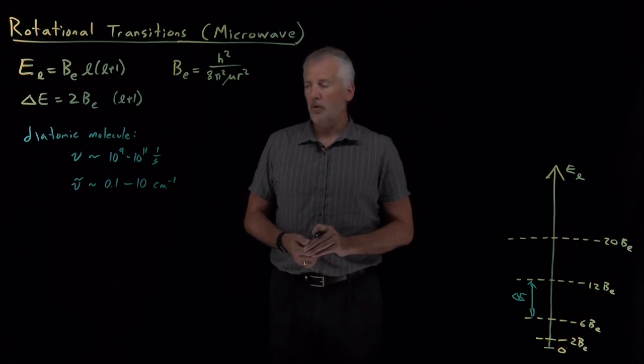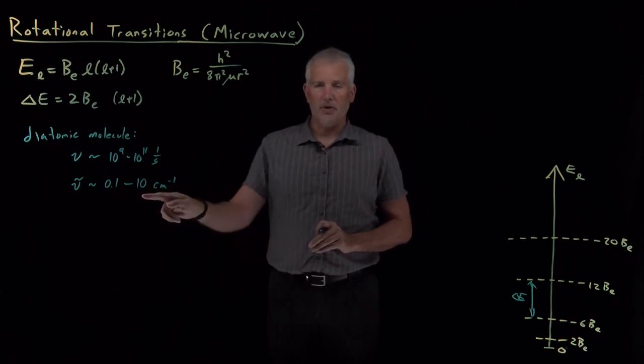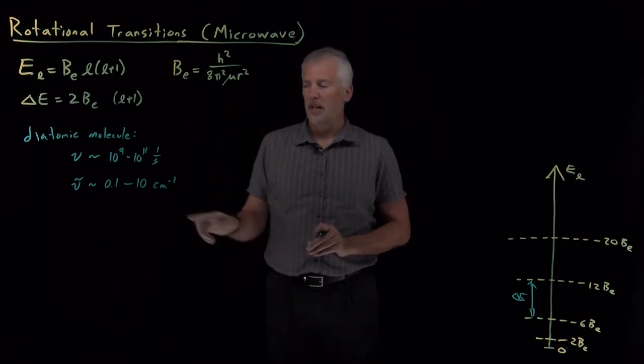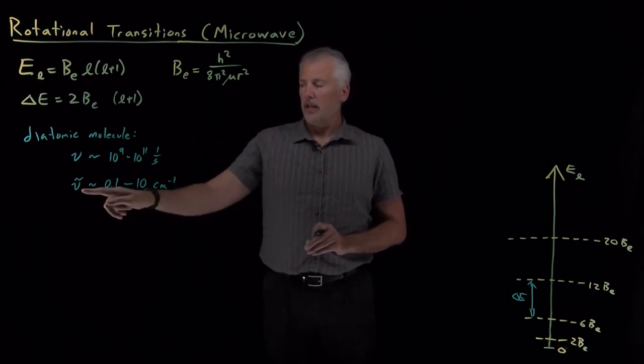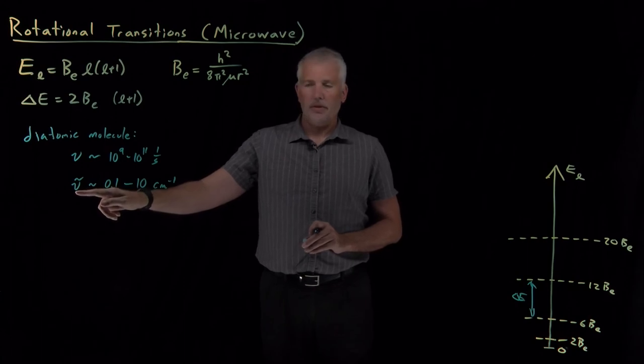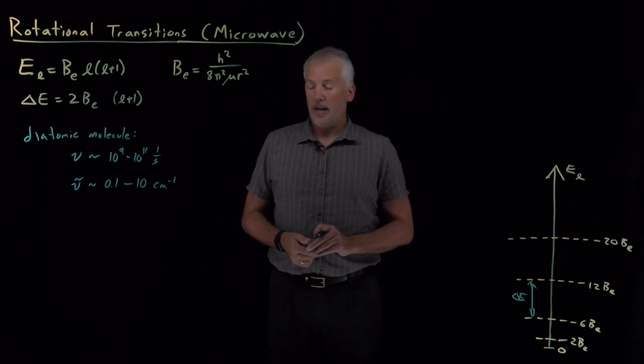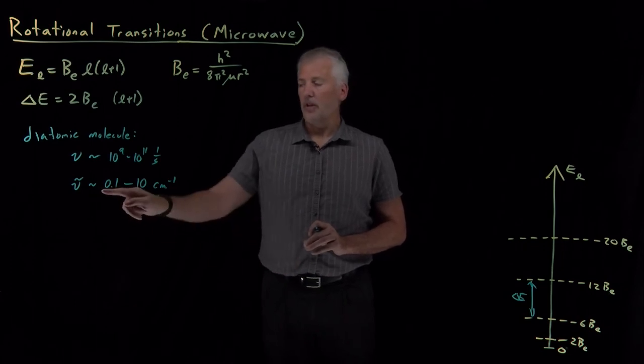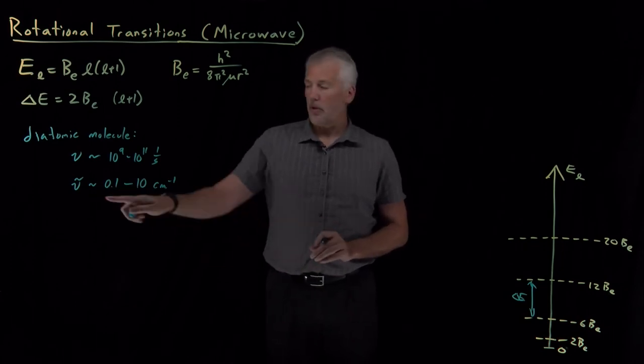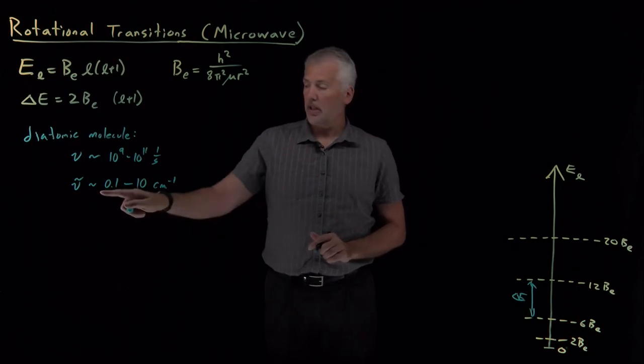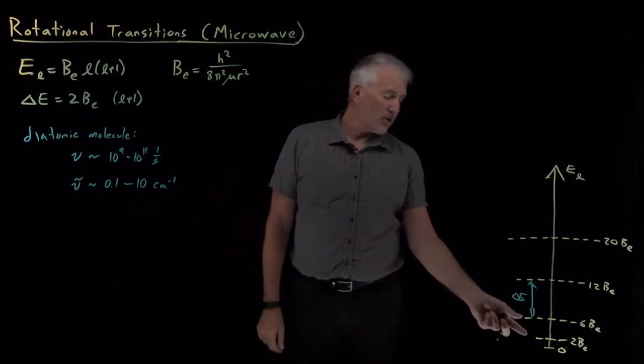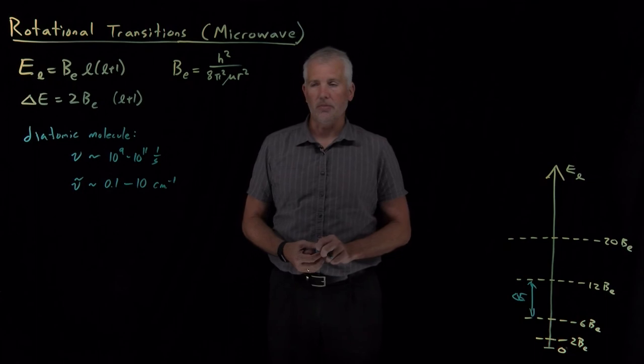Particularly light quantum mechanical molecules like H2 or HCl or any molecule involving a hydrogen atom will have a particularly small reduced mass and will have wave numbers for those transitions on the higher end of this range. Very heavy molecules, heavy diatomic molecules like maybe Br2 bromine or iodine molecules, those will have wave numbers of only tenths of an inverse centimeter or so to span the differences between these energy levels for those molecules.